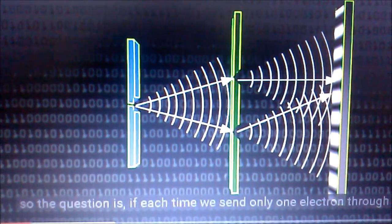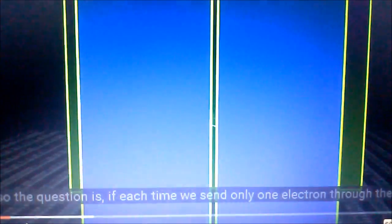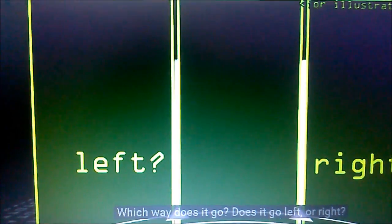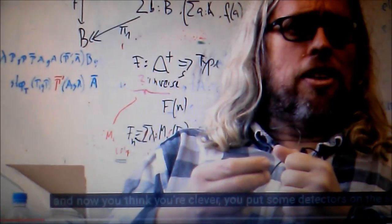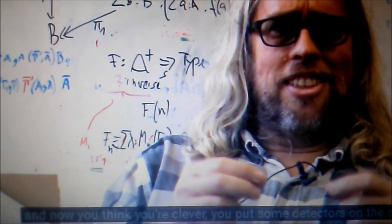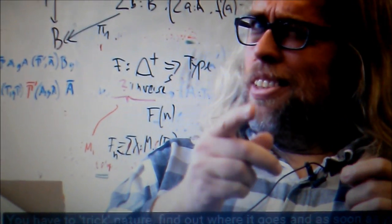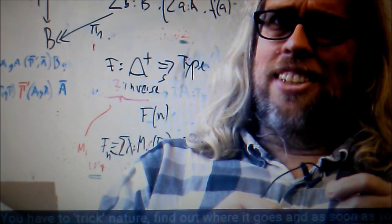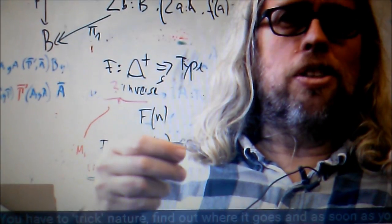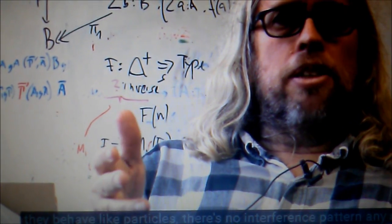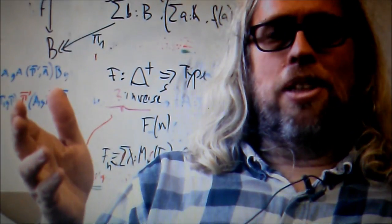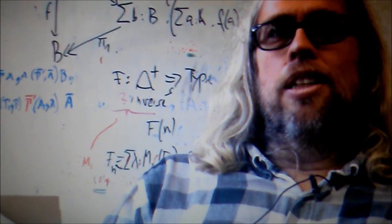So the question is, if each time you send only one electron through the slits, which way does it go? It'll go left or right. And now you think you're clever. You put some detectors on the slits. You have to trick nature, yeah. Find out where it goes. And as soon as you do this, they behave like particles. There's no interference pattern anymore. And that's called a measurement.